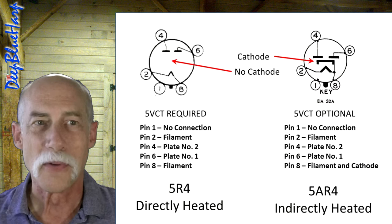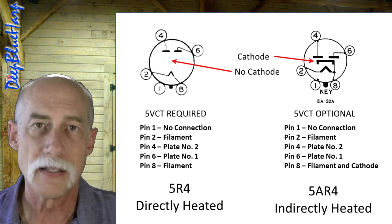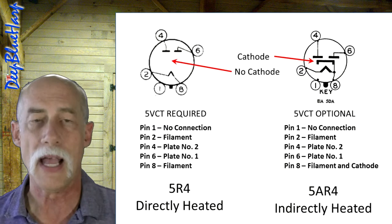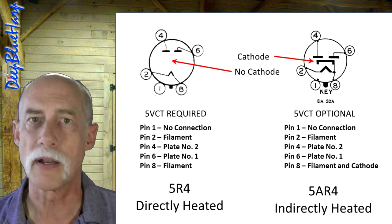The reason for having a direct heated winding that has the 5V center tap is for older vintage amps and radios, which have that center tap 5V winding. Again, you can put an indirect heated vacuum tube in there, but that's why that is there.